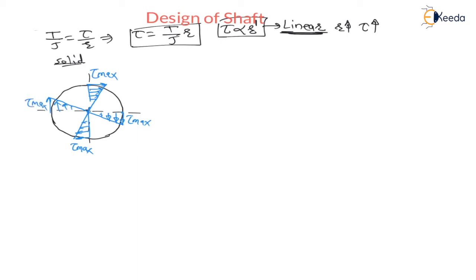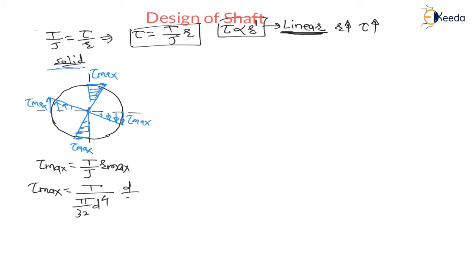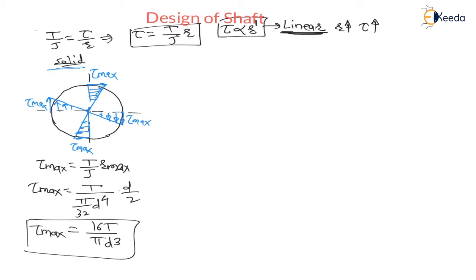For a solid shaft, the maximum torsional shear stress τ_max = (T/J)·R_max = T/(πd⁴/32) · (d/2) = 16T/(πd³). This is the maximum torsional shear stress for a solid shaft.